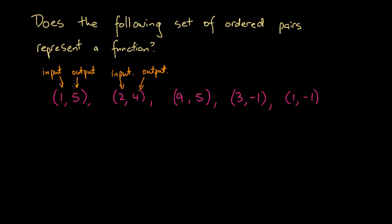We can read each of these statements as assigning an input to a particular output. For instance, the bracketed expression (1, 5) — we could read this as if we have some little machine: if you were to give that machine the value 1, the output would be 5. So if we input 2, we get 4; if we input 9, we get 5, and so on.